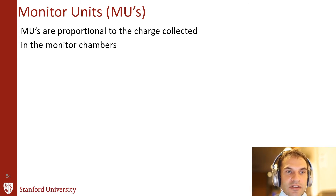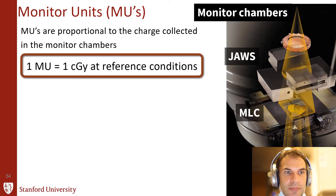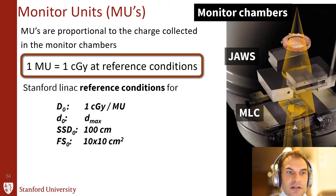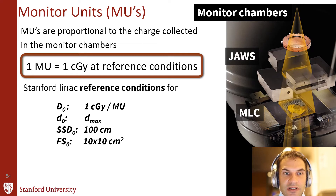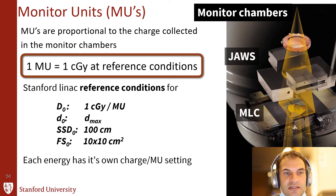Monitor units are proportional to the charge collected in the monitor chambers. The job of the monitor chambers is to make sure the radiation coming out of the machine is at a constant dose rate. One monitor unit is 1 centigray at reference conditions. At Stanford, our reference conditions are 1 centigray at 1 MU at D-max — the depth of maximum dose in water — at SSD 100, 10 by 10 field size. Each energy has its own charge per MU settings and is independently calibrated.